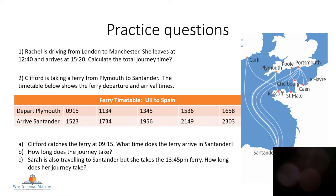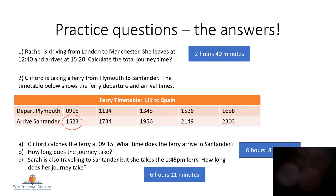Finally, Sarah's also travelling on a ferry, but she's taking the 13:45 ferry. How long does her journey take? Shall we go through the answers? Rachel left London at 12:40 and arrived at 15:20 — that's two hours and 40 minutes. Clifford caught the ferry at 9:15, so he arrived in Santander at 15:23, and his journey took six hours and eight minutes. Sarah, who took the later ferry at 13:45, her journey took six hours and 11 minutes. If you got those answers, well done.